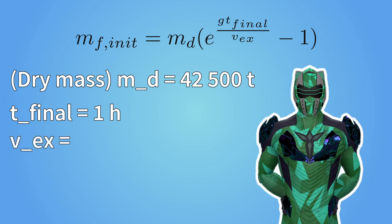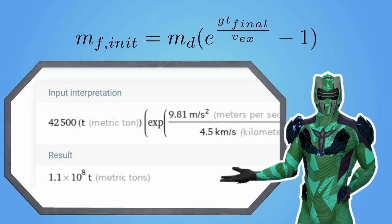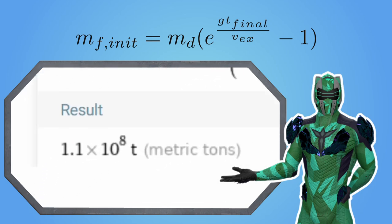Finally, we need the exhaust velocity of its engines. Currently, the best rocket engines we can build have an exhaust velocity of about 4.5 kilometers per second. Let's plug these numbers into Wolfram Alpha. We get that the Bastion needs a starting amount of fuel of 110 million metric tons.